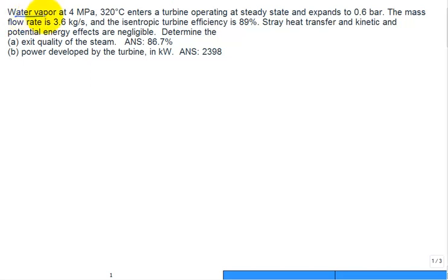Okay, for this problem we have water vapor at a high pressure of 4 megapascal and 320 degrees C enters a steam turbine operating at steady state and expands to a lower pressure of 0.6 bar. They give us the mass flow rate of the steam, 3.6 kilograms per second, and the isentropic turbine efficiency is given to be 89%. Stray heat transfer and kinetic potential energy effects are negligible, and then you calculate for part A the exit quality of the steam, and then for part B the power developed by the steam turbine. So we have a turbine, we have flow coming in, inlet state 1, flow going out, exit state 2.